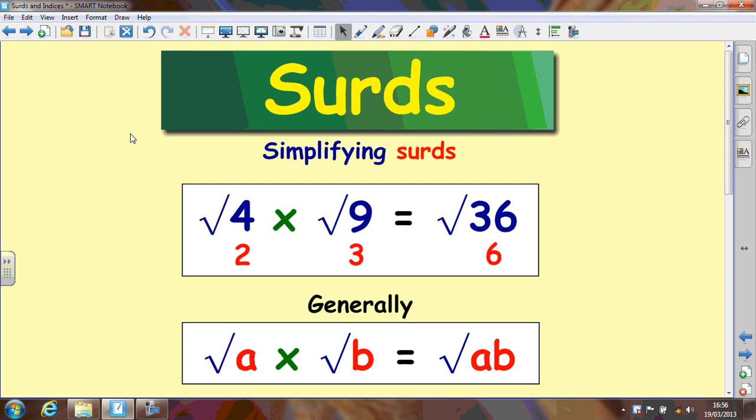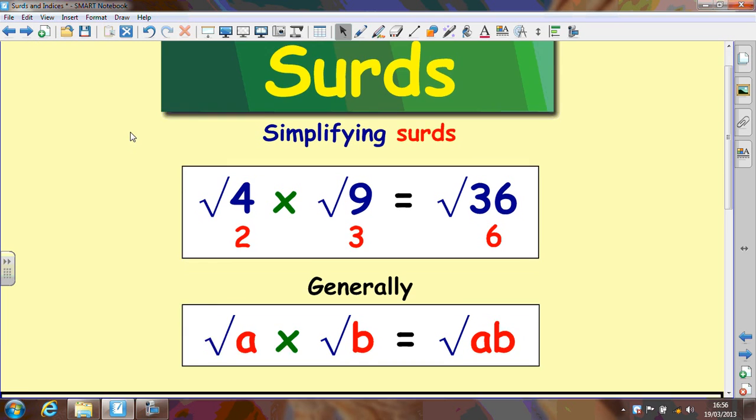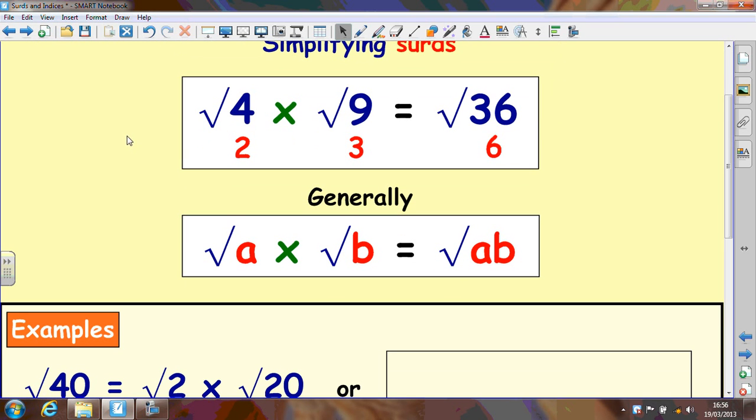Okay so we can also multiply surds just by using their normal rules of multiplication. Root 4 times root 9 is equal to root 36. If you look at that simplified that becomes 2, that becomes 3 and that's 6. So 2 threes are 6. So this operation works.